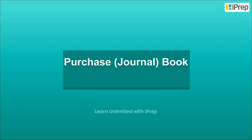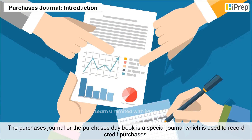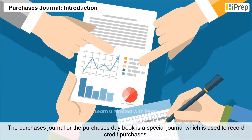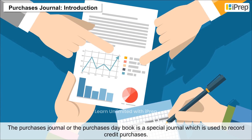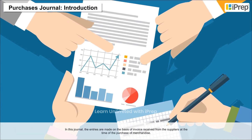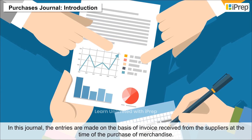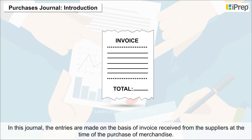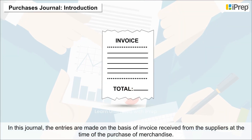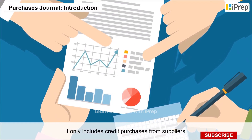The Purchases Journal, or the Purchases Day Book, is a special journal used to record credit purchases. In this journal, entries are made on the basis of invoices received from suppliers at the time of purchase of merchandise. It only includes credit purchases from suppliers.